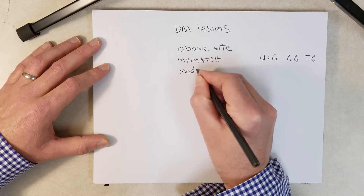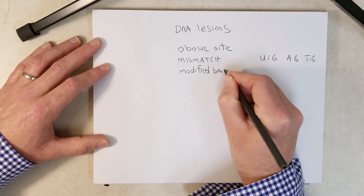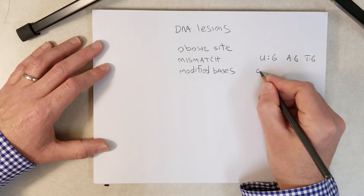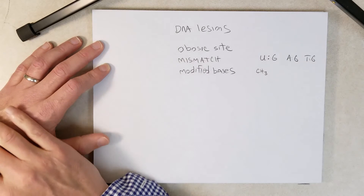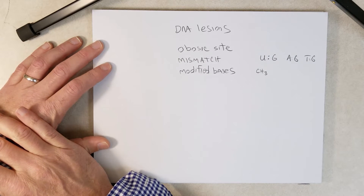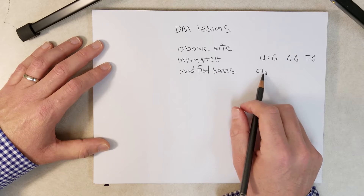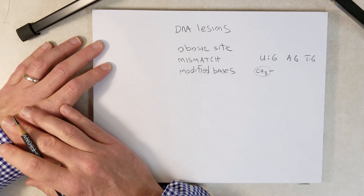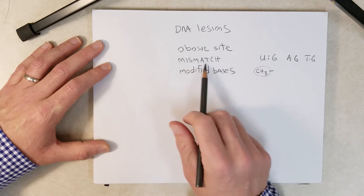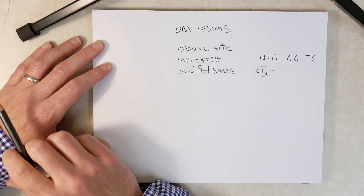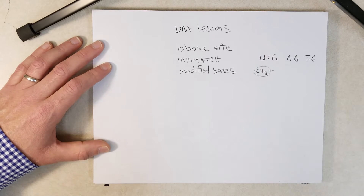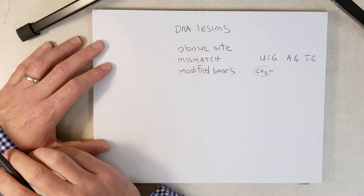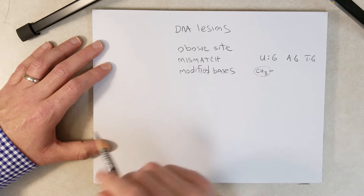Modified bases are also DNA lesions. There are carcinogenic molecules that can enter our cells and modify the bases — for example, adding a methyl group or other chemicals to the nitrogenous base. That modified base can block DNA replication or cause pairing with the wrong base pair, leading to errors during DNA replication.